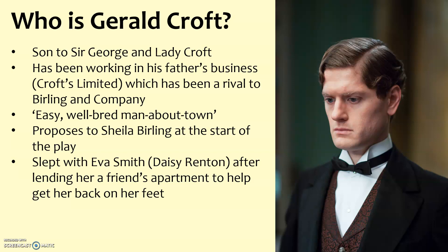He proposes to Sheila at the start of the play and she accepts. We then find out later that his key link to Eva Smith — who at this point is known as Daisy Renton, because she changed her name — is that he slept with her after lending her a friend's apartment to help her get back on her feet. So she was in a position where she needed help, and he gave her somewhere to stay.